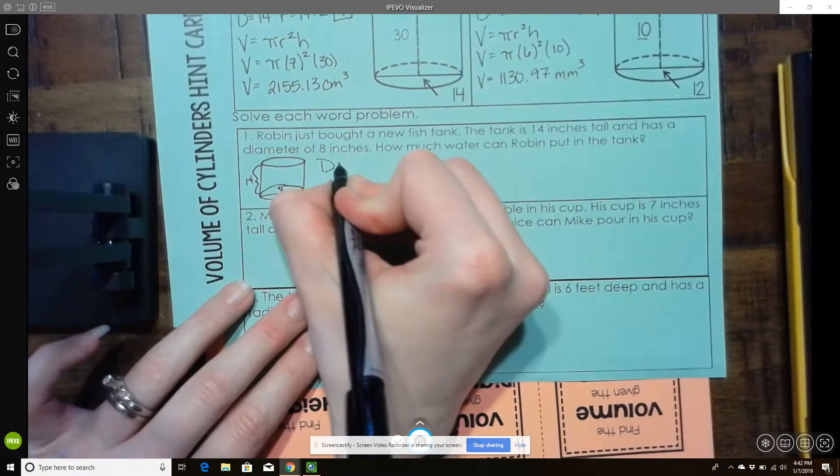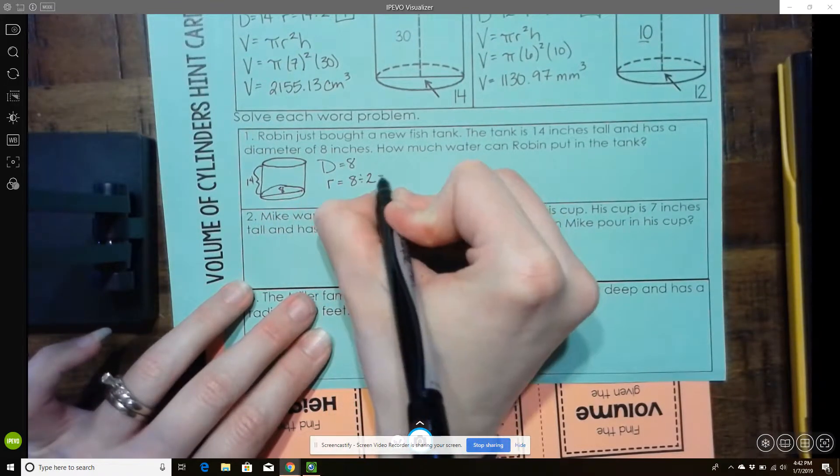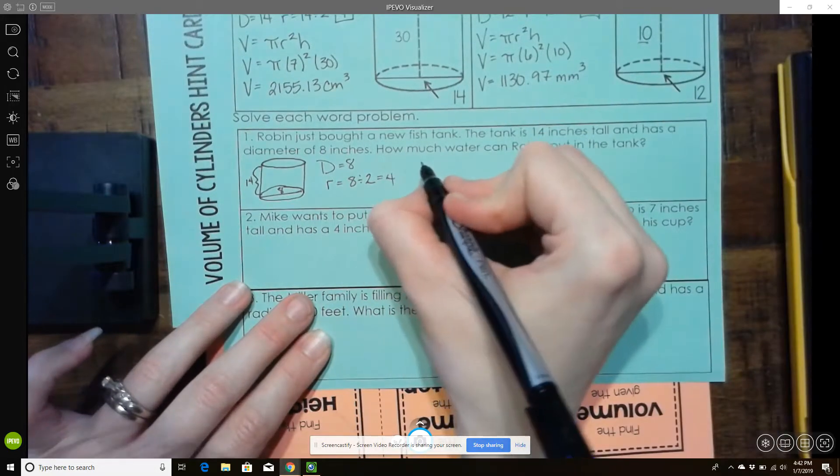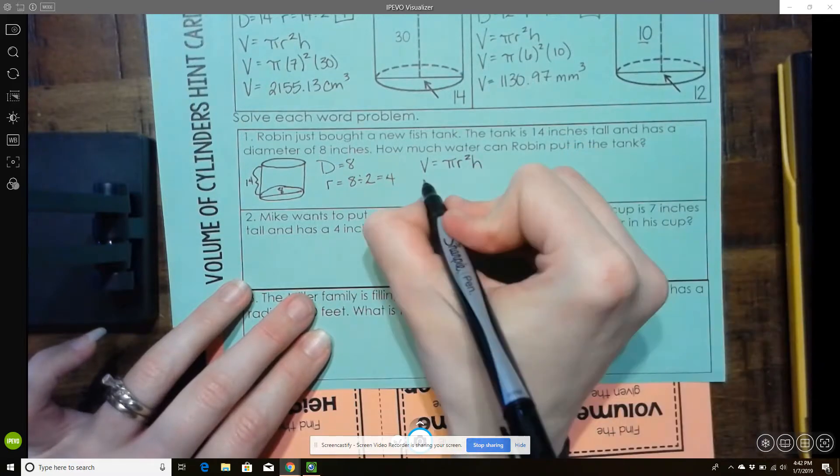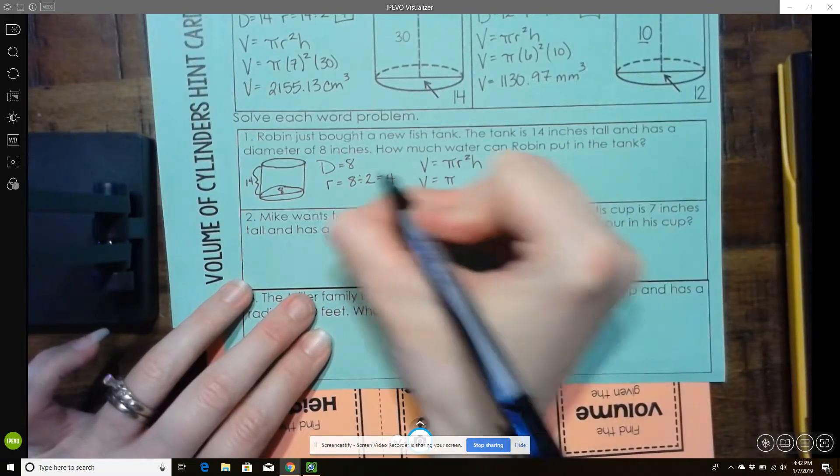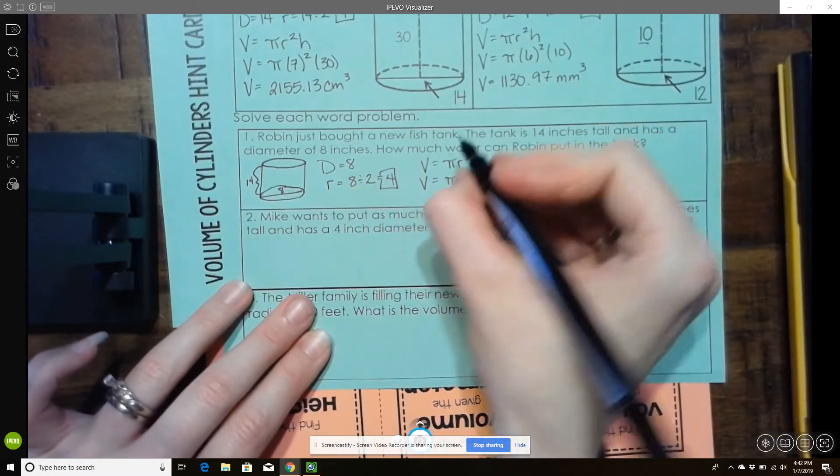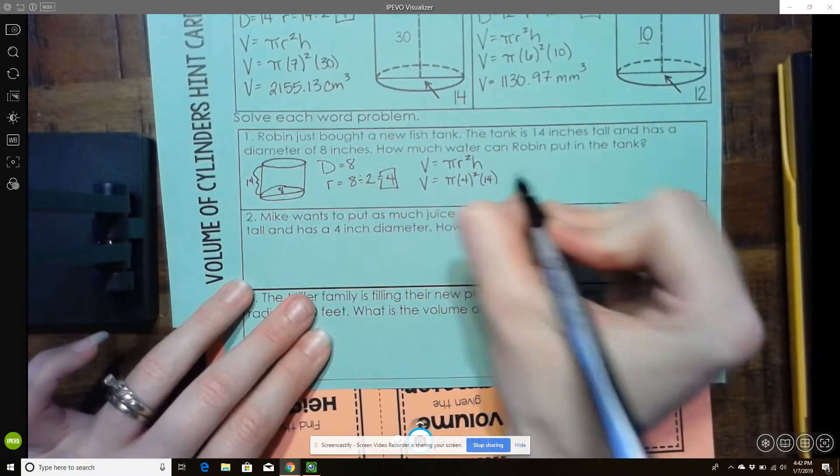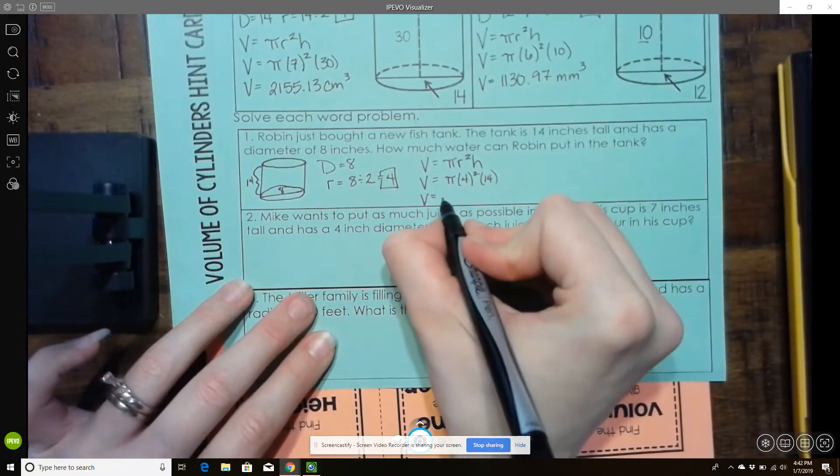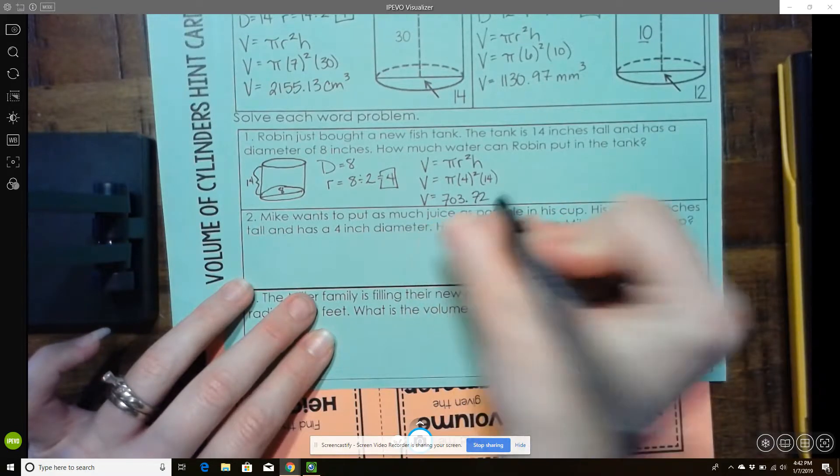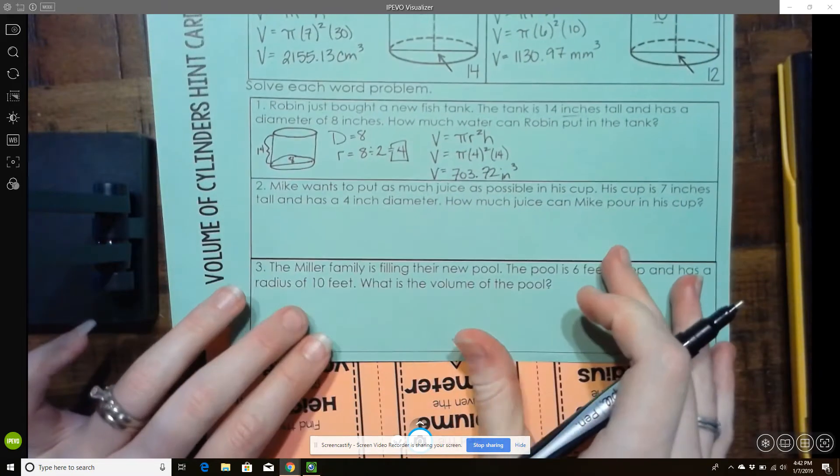So again, they gave me diameter, but I know I'm going to need radius. So I have to divide the diameter by 2. And then now my formula. So volume equals pi r squared h. So my radius is 4. And my height is 14. And you can type it in the same way that we've done these other ones. And your volume is going to be 703.72. I'm dealing with inches. So inches cubed.